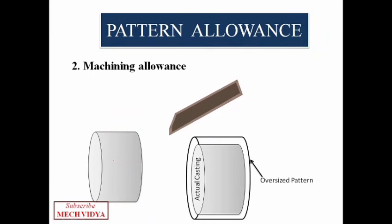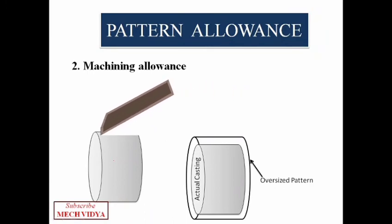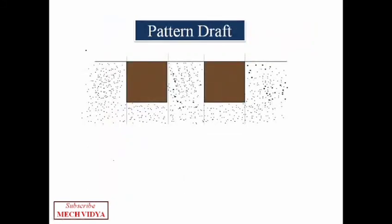Now one more reason why machining is done is to maintain very tight dimensional tolerances. By only using metal casting you cannot achieve high dimensional accuracies, so after that machining can be done. Now finally, one more thing is the pattern draft.